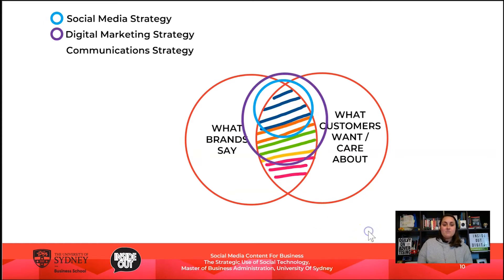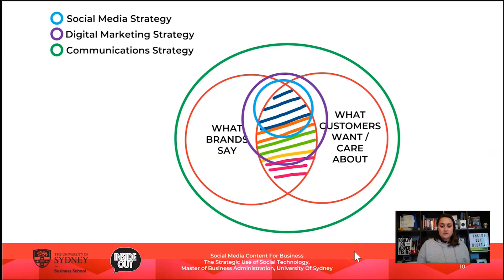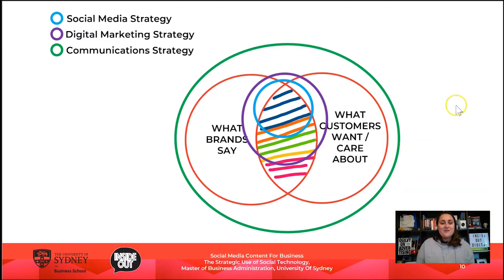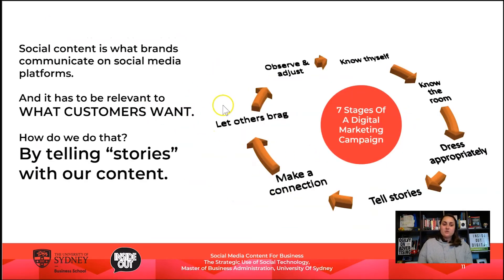Your social media strategy should ladder back up to your digital marketing strategy, which encompasses all digital communications, and even further to your overall communication strategy. Notice how these circles are concentric and actually relate to each other — social media doesn't sit off to the side where the intern manages it just because they were born in the 90s. Social media, if it's to be powerful for your business, needs to sit within the communications matrix. Social media content is what brands communicate on social media platforms, and it has to be relevant to what customers want.